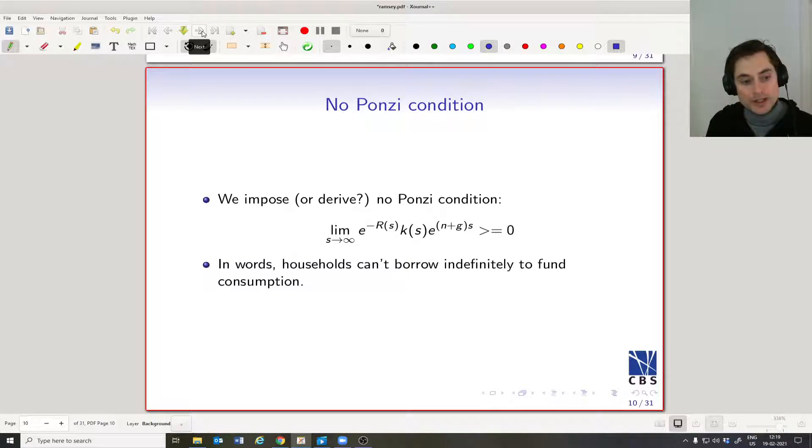Okay, so we actually need one more condition to prevent people from doing something tricky. In our model so far, we've allowed households to decide their savings rate each period.